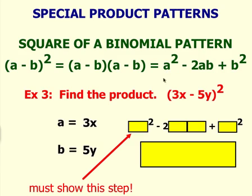When we put it into this pattern, we're going to square the a value, which is 3x. Make sure that you use parentheses around 3x because you're going to square the 3 as well as the x. Minus 2 times a, which is 3x, times b, which is 5y.